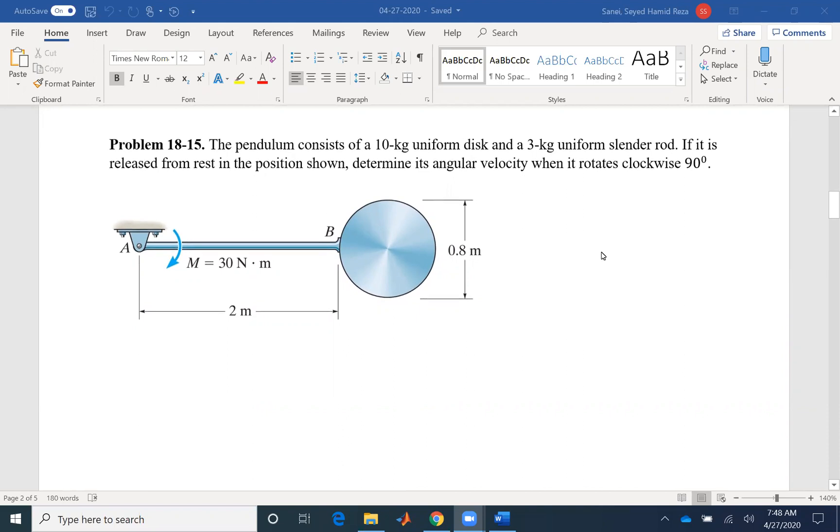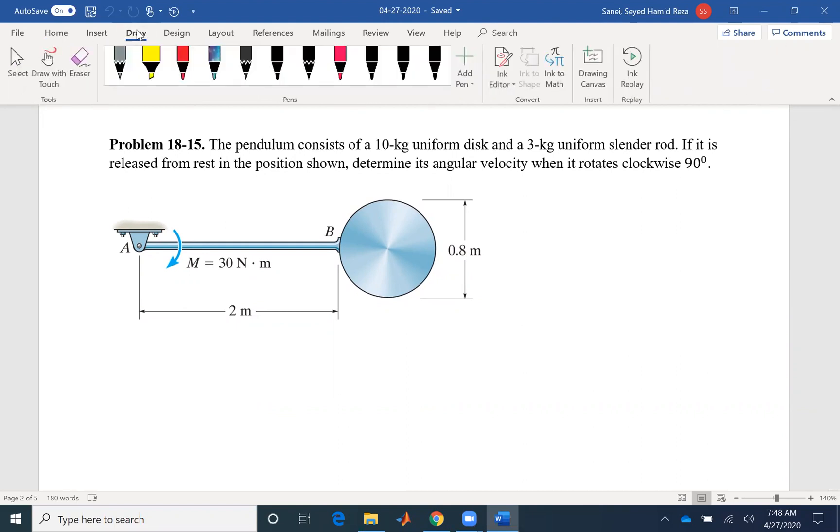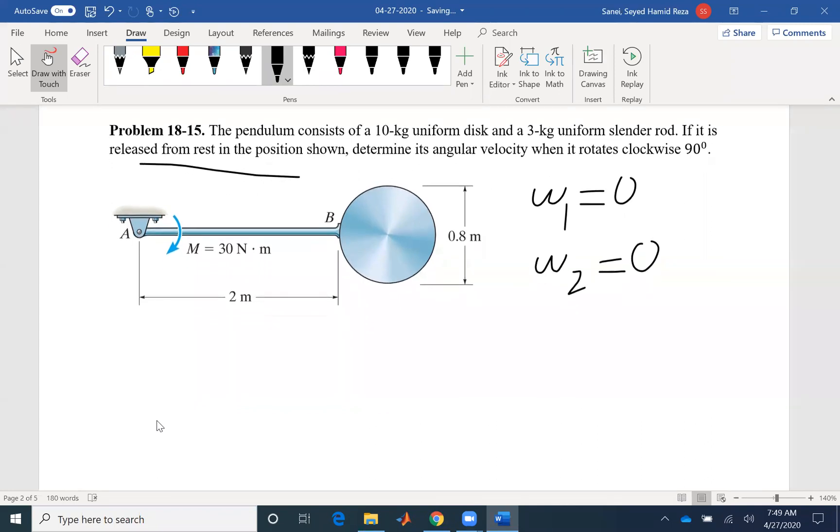We have the initial angular velocity starting from rest, which means the initial angular velocity is zero and we want to find the final angular velocity. This is the classical work-energy problem because we want the final angular velocity at a second position. If it was about a second time frame then impulse momentum would have been a better approach. Here the first instance is horizontal and at the final instance this one becomes completely vertical.